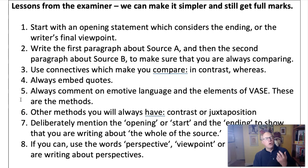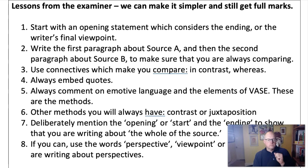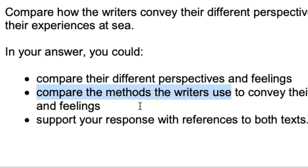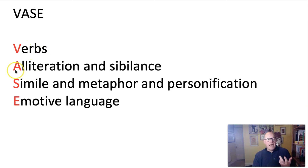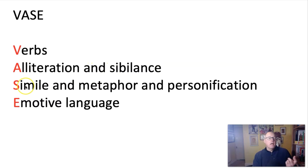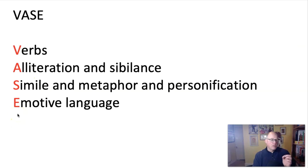Technique number five is to always comment on the emotive language — you will always get that in the exam, 100% guaranteed — but you'll also have some other technical features of language, which I've given the acronym VARS. V stands for verbs, A stands for alliteration — but you will also always get some sibilance. S stands for simile, but of course the other figurative language is metaphor and personification, which happen nearly as frequently. And the final one: emotive language. So if you know you're going to the exam just looking for those, you can have high confidence they'll be there, and you don't have to revise loads of other stuff.